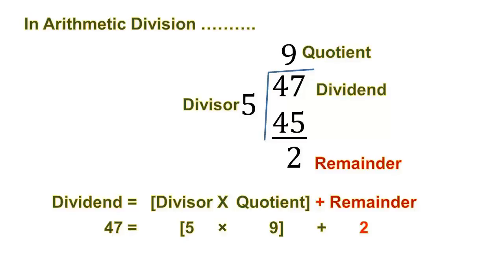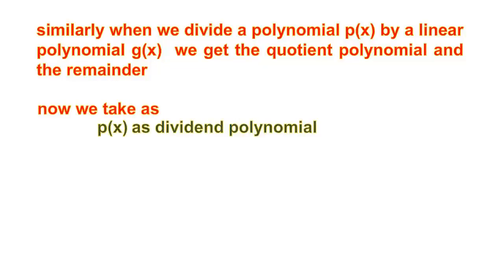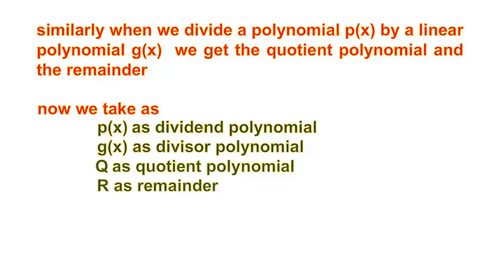When we divide 47 by 5, we get 9 as Quotient and 2 as Remainder. Like that, if we divide P of x polynomial with a linear polynomial G of x, we get a polynomial Quotient and Remainder. Now, take P of x as the Dividend Polynomial, G of x as the Divisor Polynomial, Q as the Quotient, and R as the Remainder.